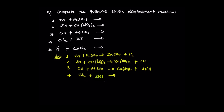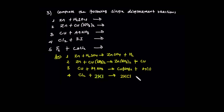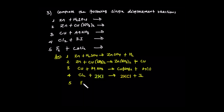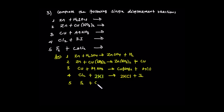For the chlorine and iodine reaction: chlorine is more reactive than iodine in the halogen reactivity series. So chlorine can displace iodine from potassium iodide, giving potassium chloride and iodine.